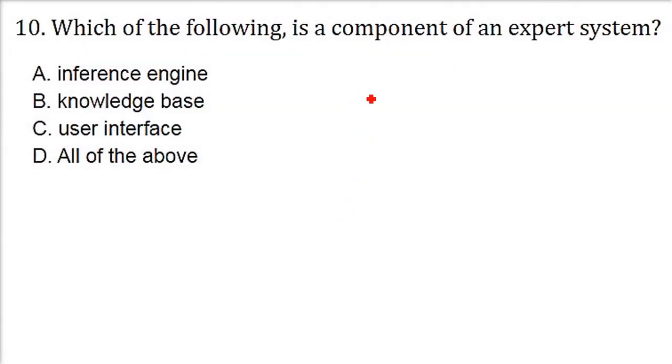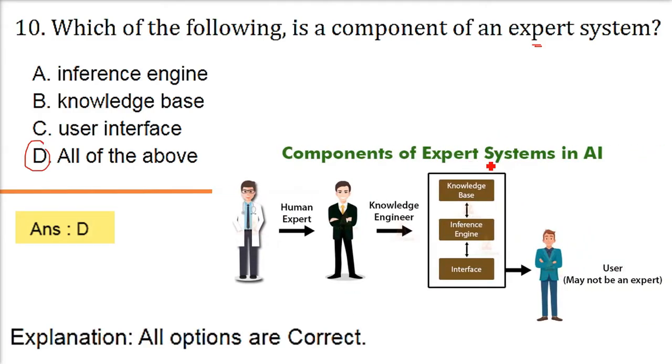Which of the following is a component of an expert system? So expert system was, as I said, basic building blocks of the present AI we have. So you are talking to a system and actually it's an expert system. The answer is D here, all of the above. So these are the components of an expert system in AI. Human expert, knowledge engineer, there will be a knowledge base and there will be inference from this knowledge base. That is called inference engine. Then we have the interface. And this interface is for the user, he may not be an expert. So we have inference engine, we have knowledge base, user interface as well. All options are correct in this case.